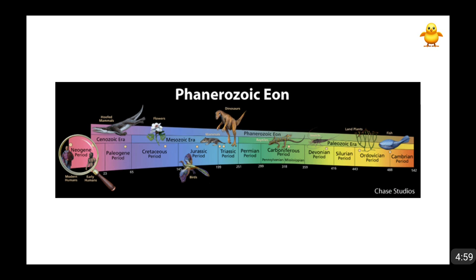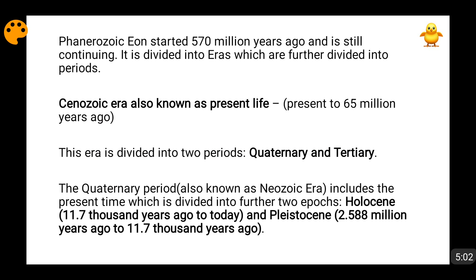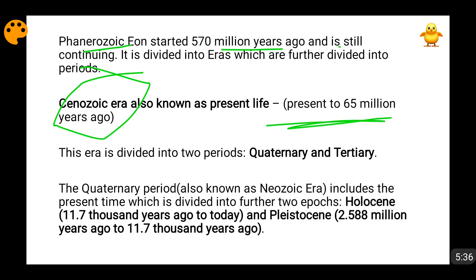Moving forward friends. The Phanerozoic Eon started 570 million years ago and is still continuing — from present to 570 million years ago. In the Phanerozoic Eon, three eras were coming: the Cenozoic Era, the Mesozoic Era, and the Paleozoic Era. First, we are going to talk about the Cenozoic Era, which lies from present day to 65–66 million years ago. This Cenozoic Era can be divided into two periods: the Quaternary Period and the Tertiary Period.